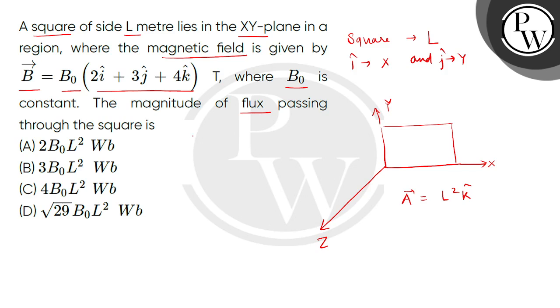So we have to find how much flux we have. Now we will represent the flux in scalar quantity in the form of dot product of B and A, where A means area vector. So we can write B₀(2î + 3ĵ + 4k̂) dot L² k̂.